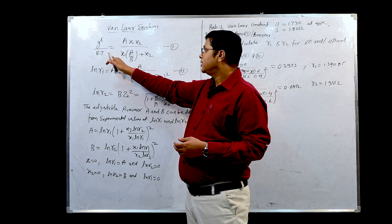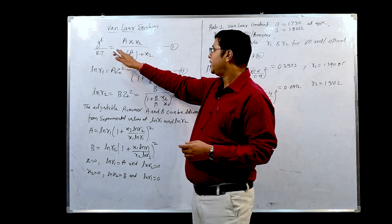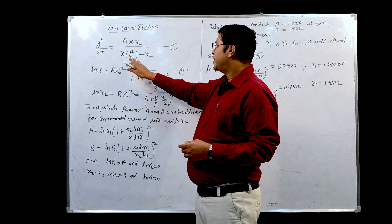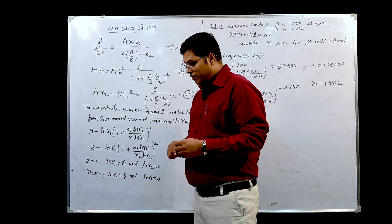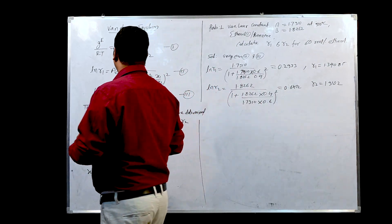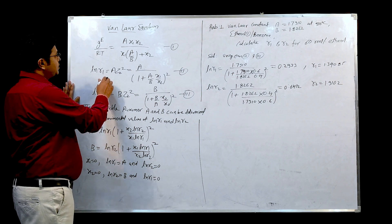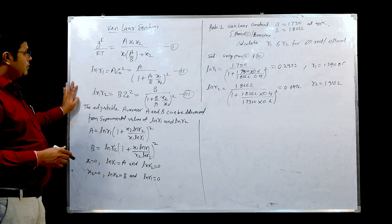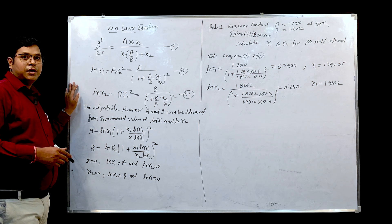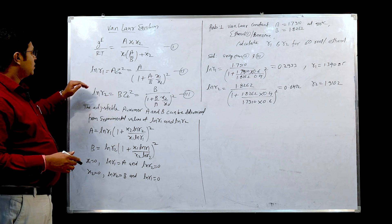Van Laar has considered that gE/RT, the excess Gibbs energy divided by RT, is equal to A·x₁·x₂ upon (x₁·(A/B) + x₂), where A and B are adjustable parameters. He then rearranged this formula to determine the activity coefficient — refer to the previous video lectures based on the Margules equation and properties of solution to see how to rearrange this.